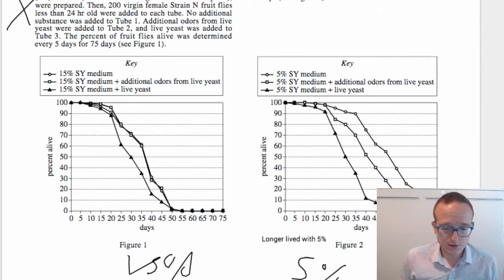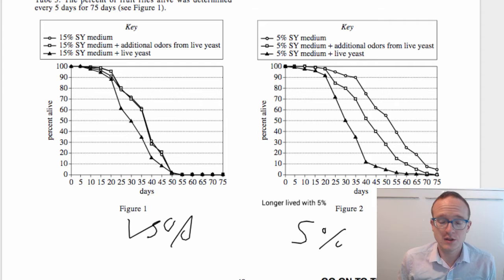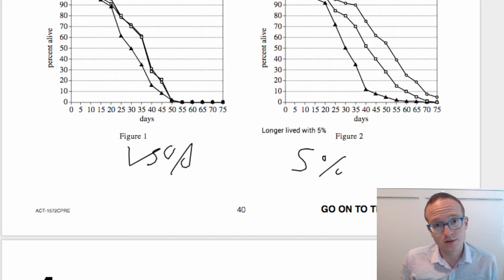And then I look over here and what's the difference within the graph? What's the difference between each of these lines? Well, it's whether you use SY medium. What's SY medium? I don't know, but it doesn't really matter. SY medium and additional odors, SY medium and live yeast. So SY medium and live yeast is the farthest one left. These are a little bit more spread out. So live yeast, additional odors, and SY medium. Basically, if it's percent alive and days, these flies are living longer.